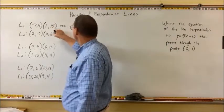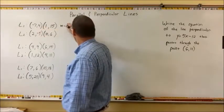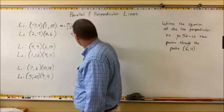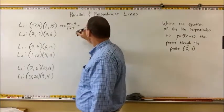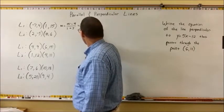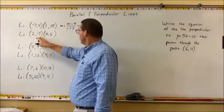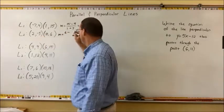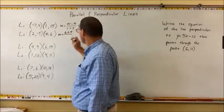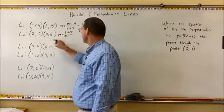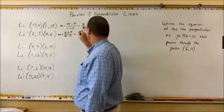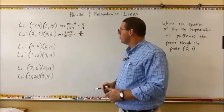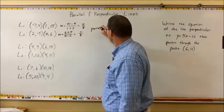For the first line through points (−7, 4) and (1, 15): m equals 15 minus 4 over 1 minus negative 7, which is 11 over 8. For the second line through points (2, −5) and (10, 6): m equals 6 minus negative 5 over 10 minus 2, which is 11 over 8. The slope of line 1 is 11 over 8 and the slope of line 2 is 11 over 8, so these lines are parallel because they have the same slope.